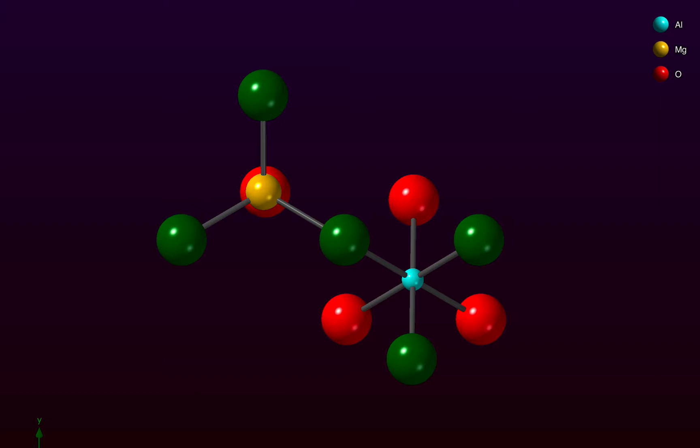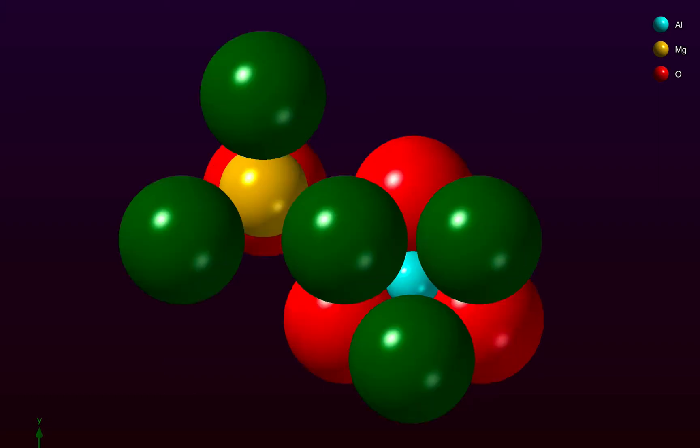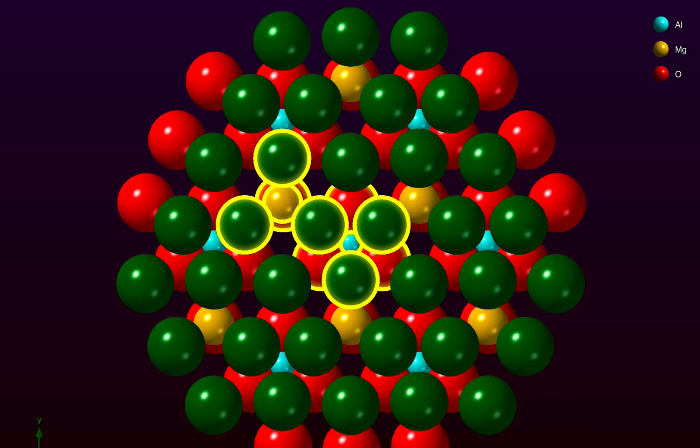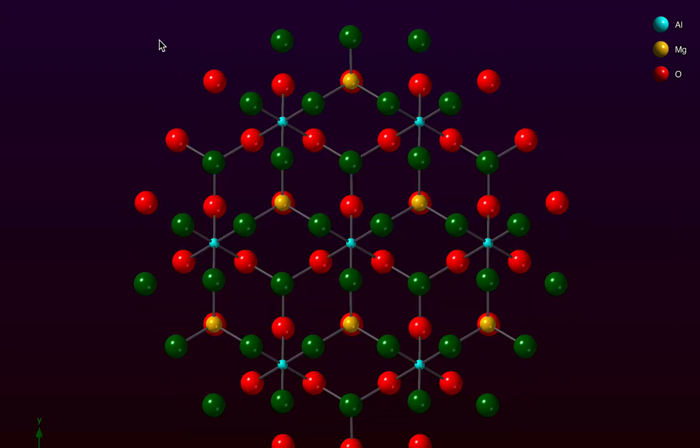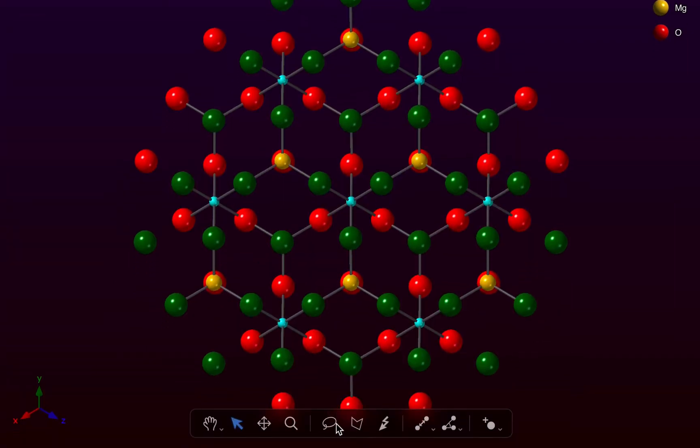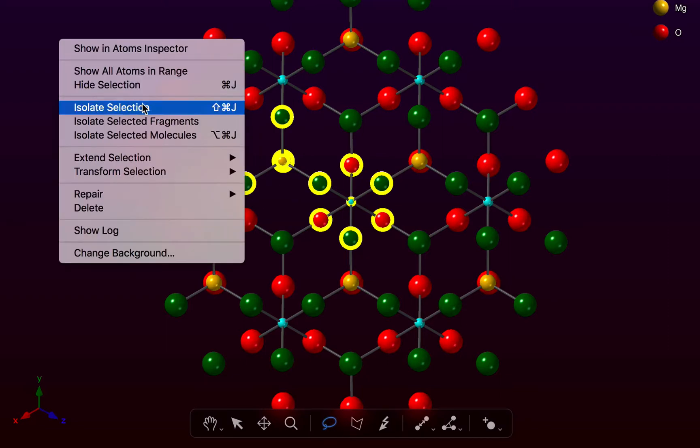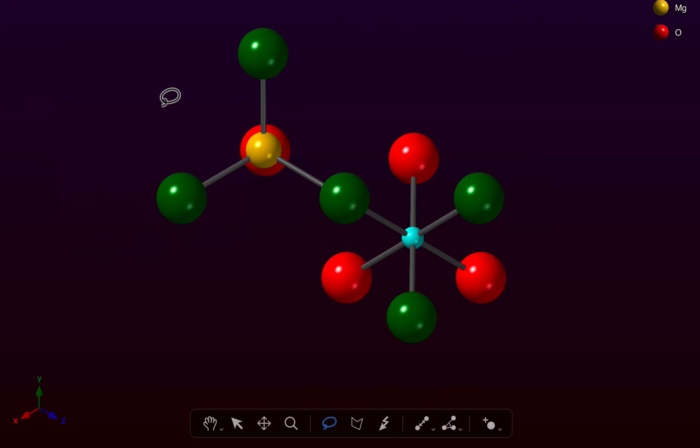Now something else that we could have done is if we go back we can use our undo command and switch to a ball and stick plot. We can use the lasso tool to do the same thing. So we can draw around areas of interest with the lasso and we can use the isolate selection command to show those atoms.